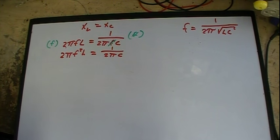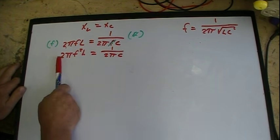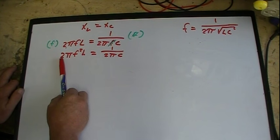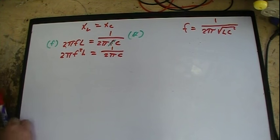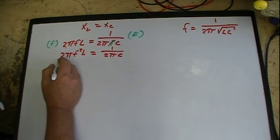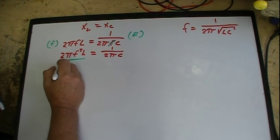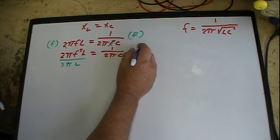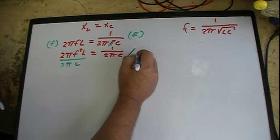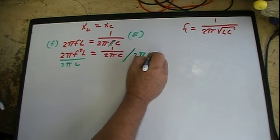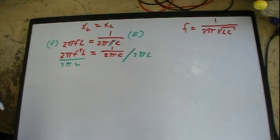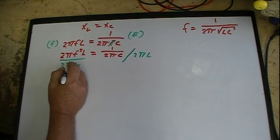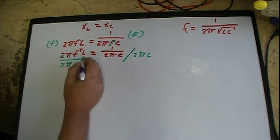Now we're going to jump a little bit here because now I want to get rid of these guys over here. I want this f squared by itself. So in this case, instead of multiplying like I did up here, I can divide by 2 pi L. I'll do the same thing here. I'll draw a line here: 2 pi L. The line just is a fraction showing that I'm dividing. Now over here, two cancels, pi cancels, L cancels.